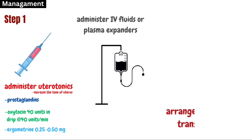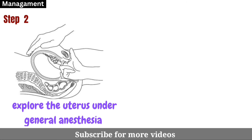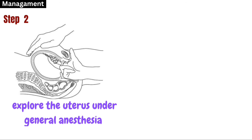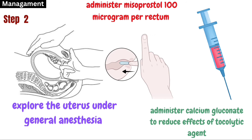Administer IV fluids or plasma expanders to maintain tissue perfusion, and arrange extra blood for transfusion if needed. Step 2: explore the uterus under general anesthesia for retained placenta; administer misoprostol 100 micrograms per rectum. If atonicity is caused by a tocolytic agent — a drug which suppresses uterine contractions — administer calcium gluconate 1 gram IV slowly.